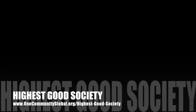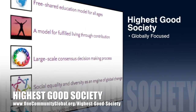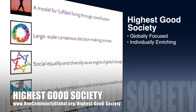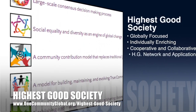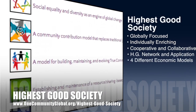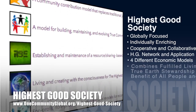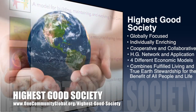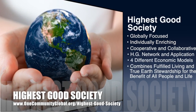The One Community approach to highest good society is globally focused, individually enriching, cooperative and collaborative. It includes a highest good network and application, four different economic models, and combines fulfilled living and true earth stewardship for the benefit of all people and all life on this planet.